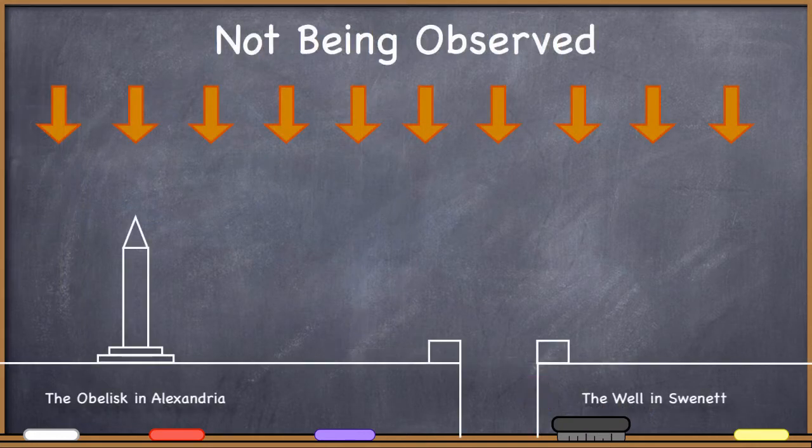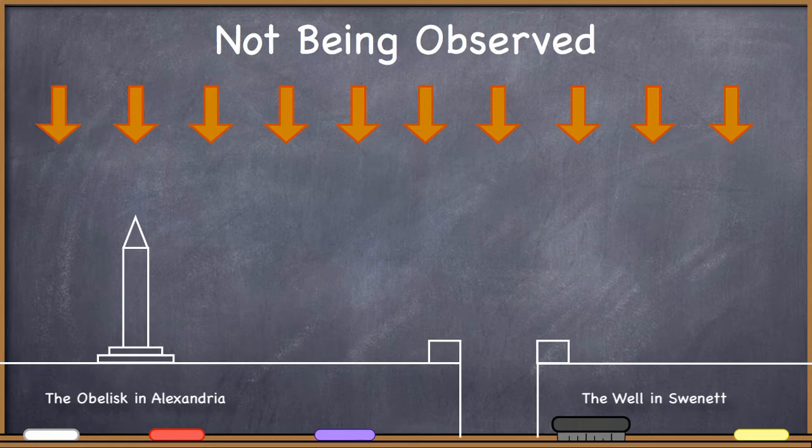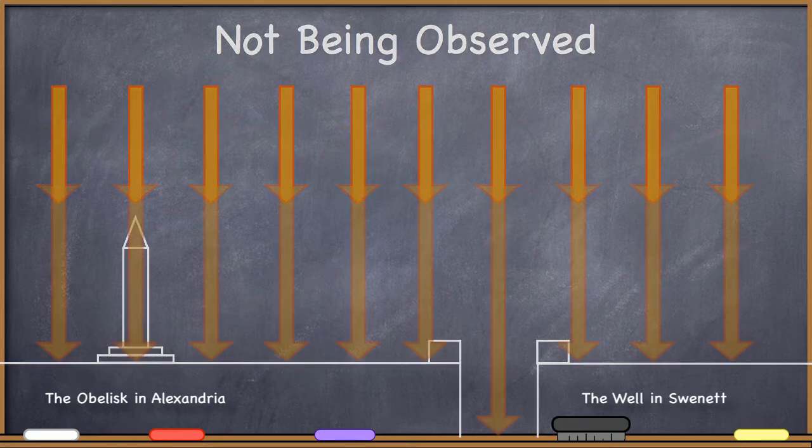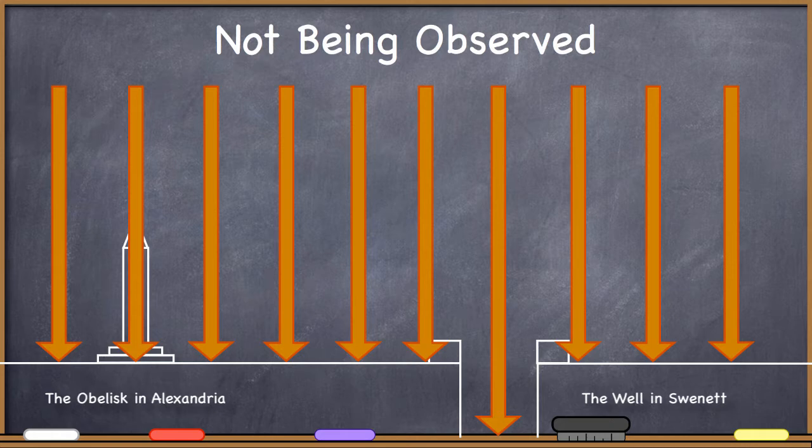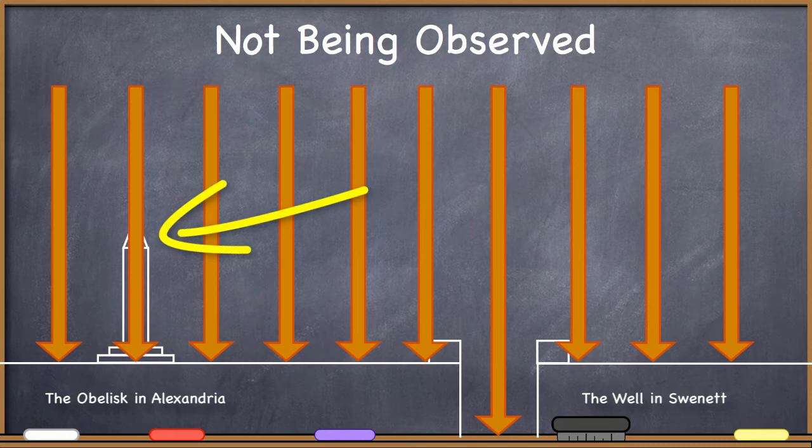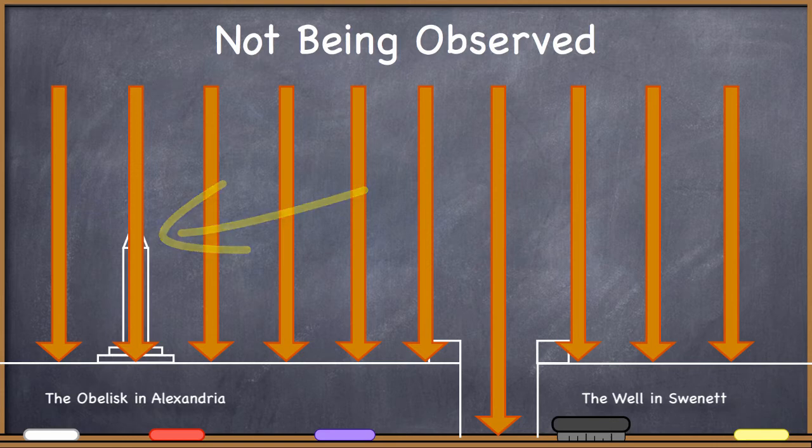He realized that since at that very moment the sun's rays were hitting the earth and going straight down that well, that if the earth were flat then the sun's rays would also be hitting the very top of the obelisk in the courtyard at the Library of Alexandria, shining straight down on top of it and therefore it should cast no shadow. But that's not what he was observing.